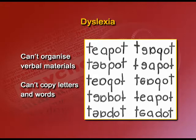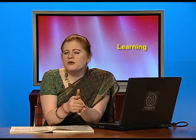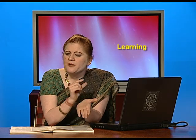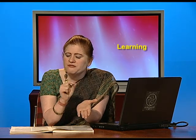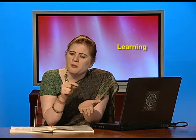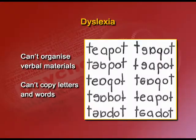Dyslexia is a very common learning disorder symptom. Dyslexia is where you cannot organize verbal materials. These people have problems copying letters or words — similar-looking symbols like 'p' and '9', or 'b' and 'd', are very difficult for them to copy. They will not be able to understand the relationship between certain words with different alphabets, and letters or words might be copied in reverse or in other directions.